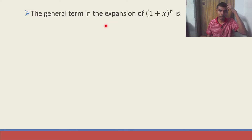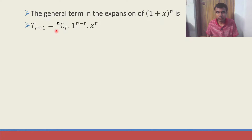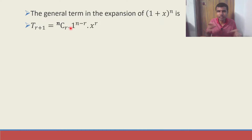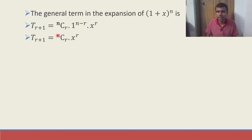The general term in the expansion of (1+x)^n is: T(r+1) = nCr · 1^(n−r) · x^r. Since the first term is 1, one raised to any power gives 1. So T(r+1) = nCr · x^r.